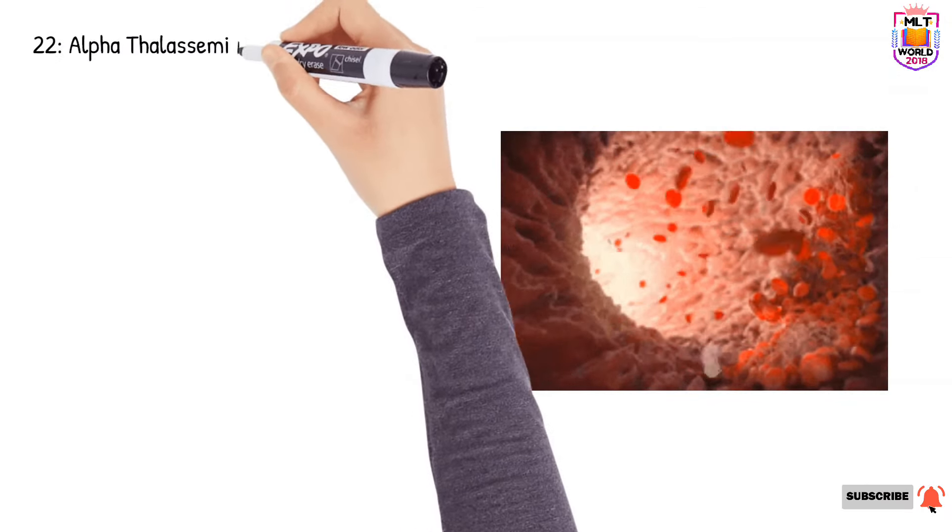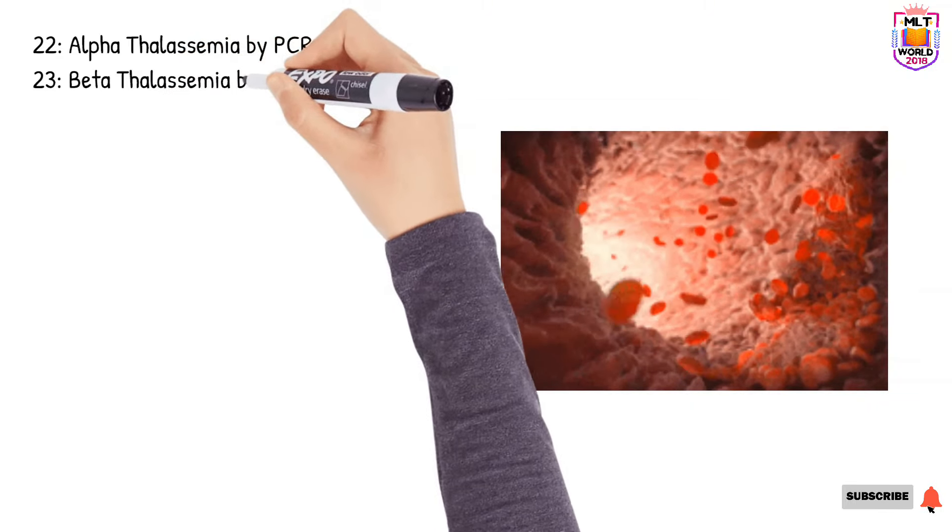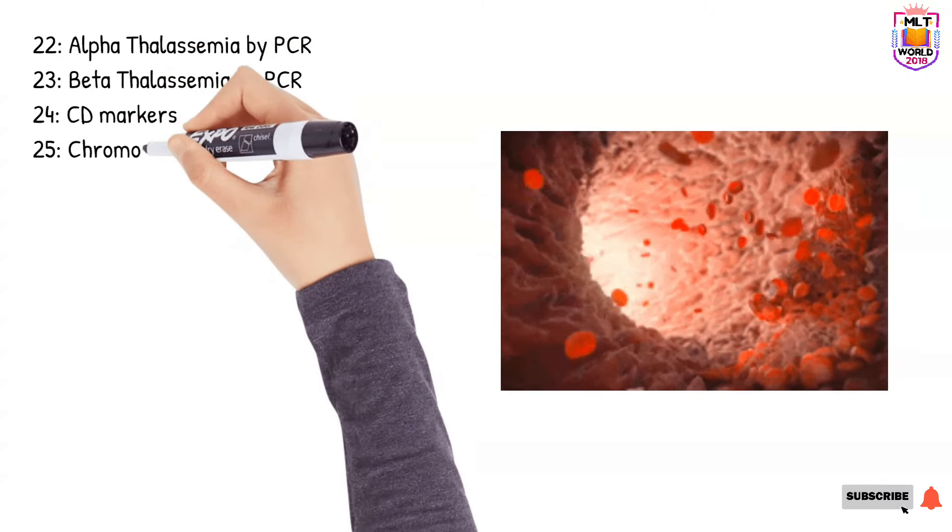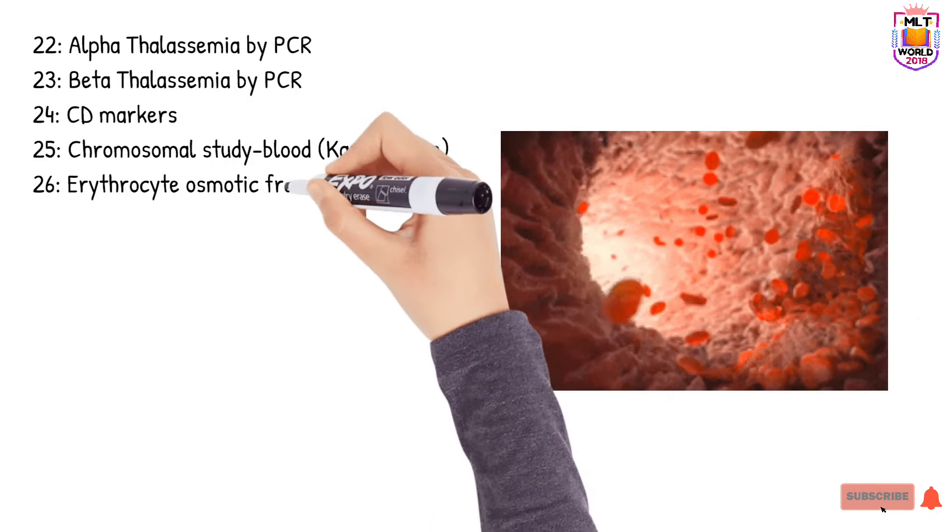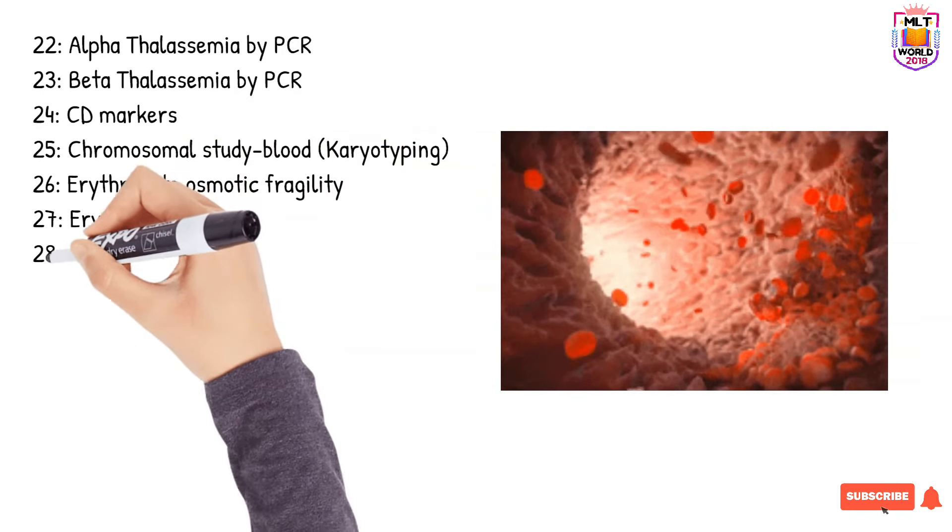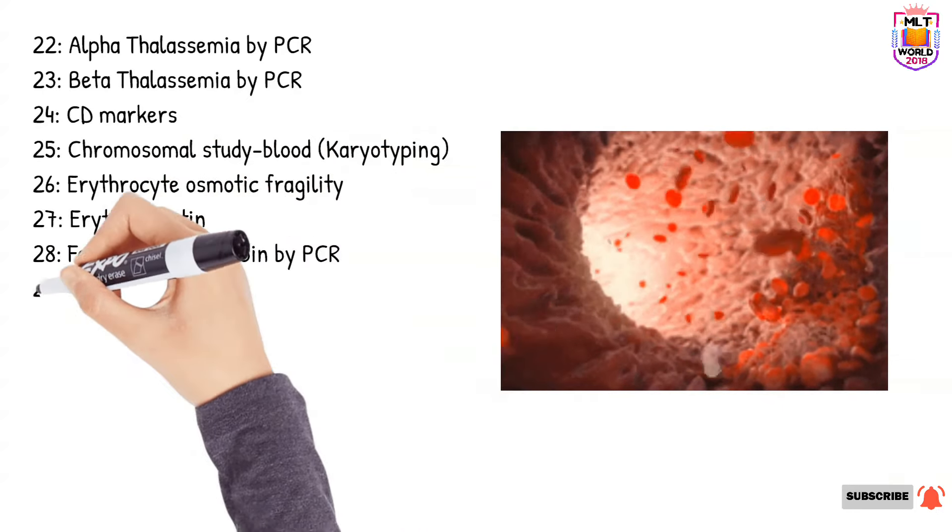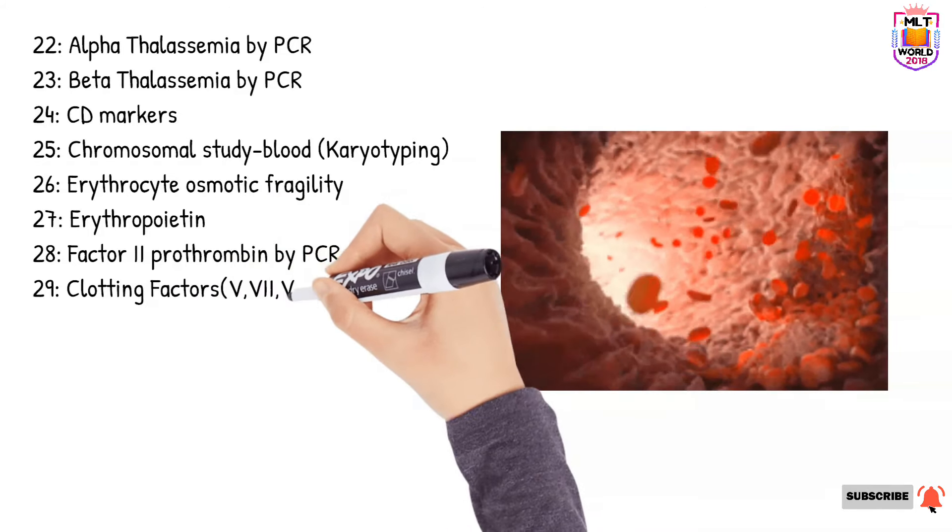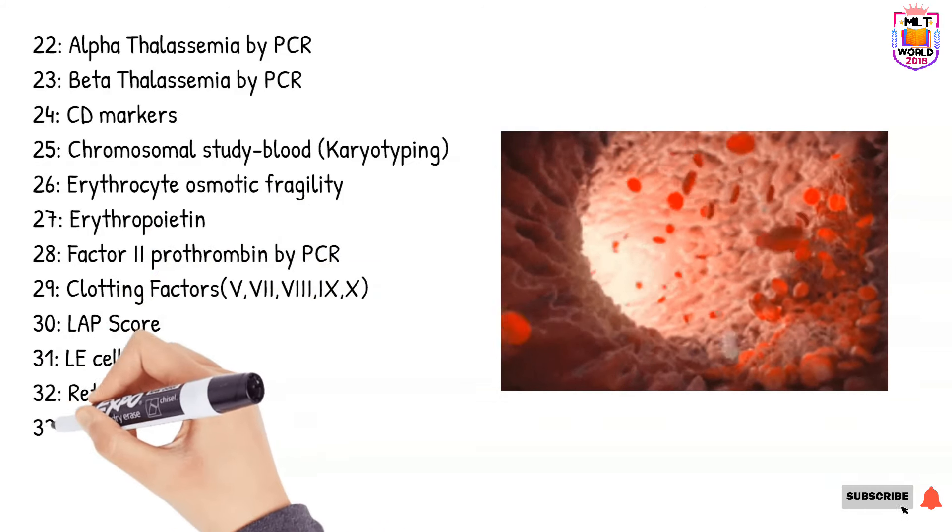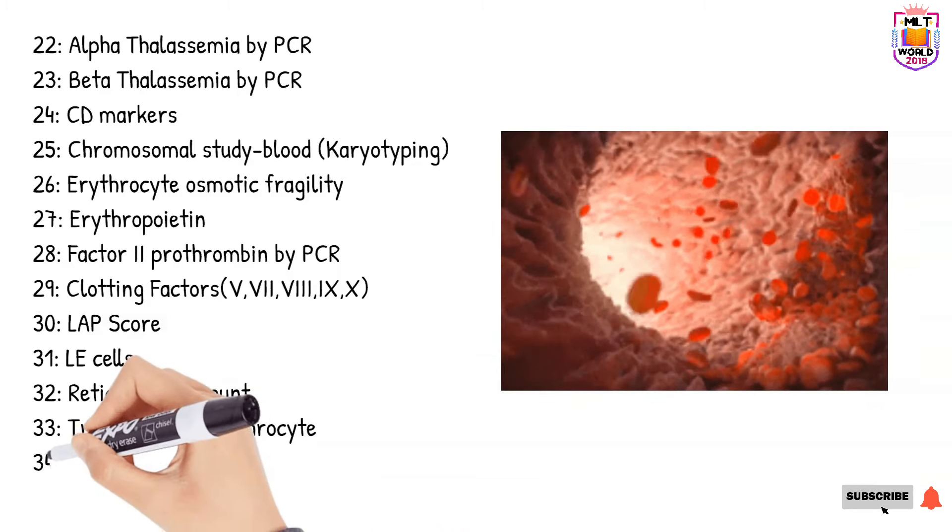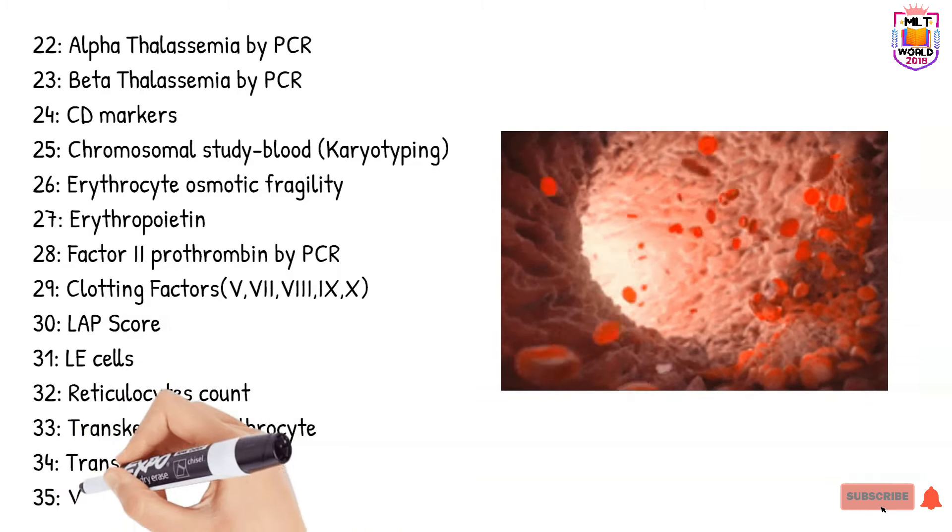And other tests include alpha thalassemia by PCR, beta thalassemia by PCR, CD markers, chromosomal study, blood karyotyping, erythrocyte osmotic fragility, erythropoietin, factor 2 prothrombin by PCR, clotting factors like 5, 7, 8, 9, 10, LAP score, LE cells, reticulocyte count, transferrin, laser.